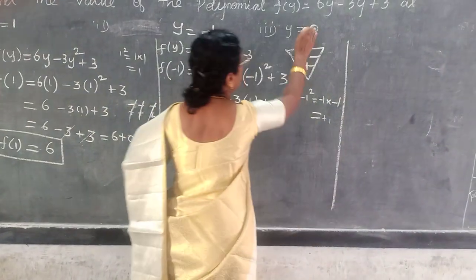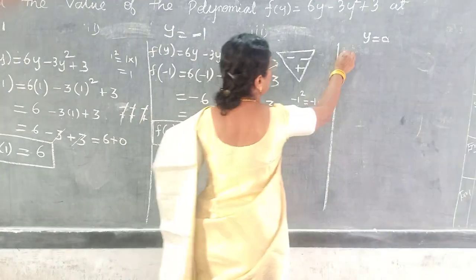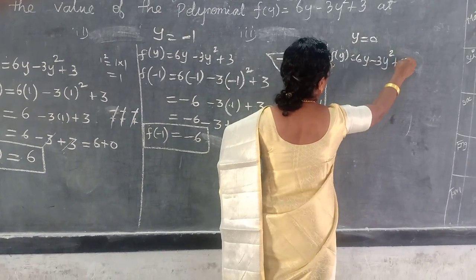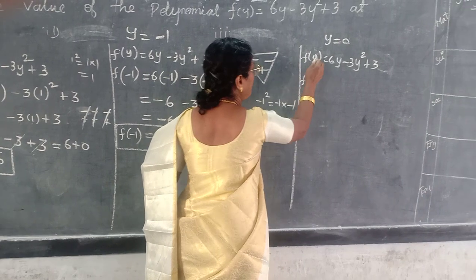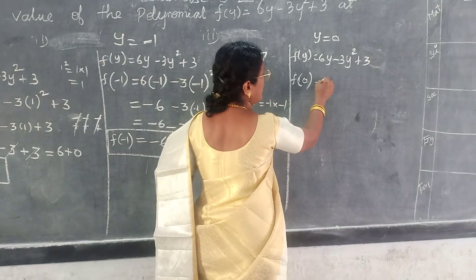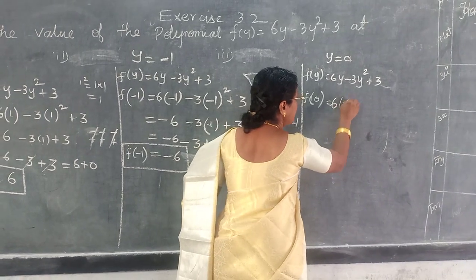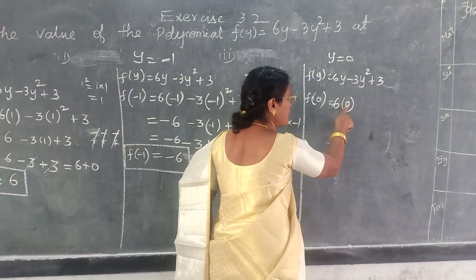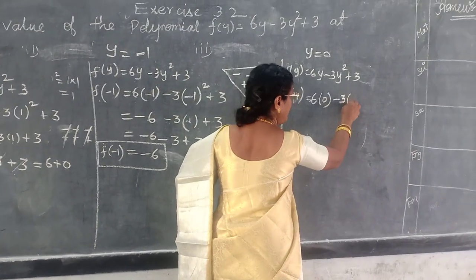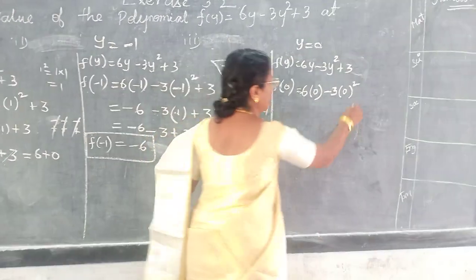Next one is y equal to 0. F of y equal to 6y minus 3y squared plus 3. So f of — in the place of y, what will you write? 0. 6 into 0, minus 3 into 0 squared, plus 3. But the square is not necessary; since it is given in the problem you are writing 0 squared. The substitution rule is just you are writing it.